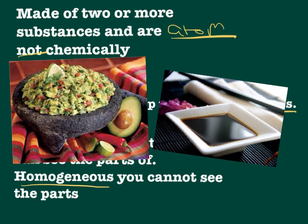So if you can see here, here's your guacamole — you can see the different parts. For the soy sauce, you cannot see the different parts. Those are homogeneous — you cannot see the other parts.